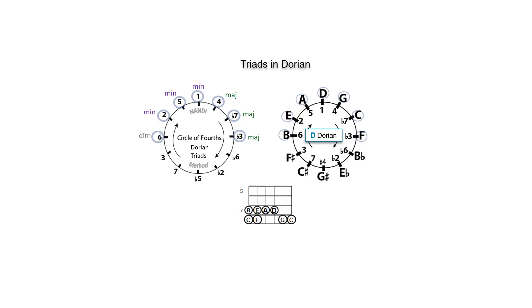The order of fourths helps identify Dorian triads: a diminished triad on scale degree 6, minor triads on 2, 5, and 1, and major triads on 4, flat 7, and flat 3.